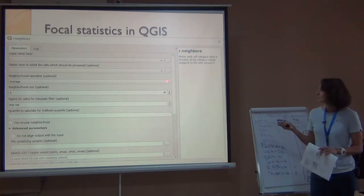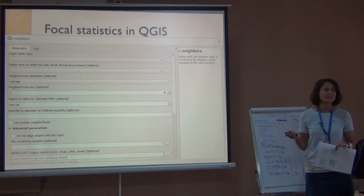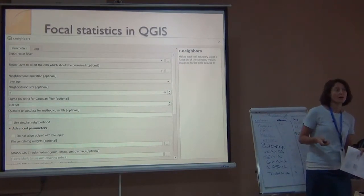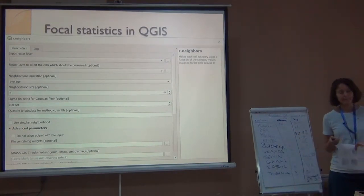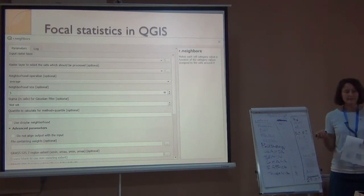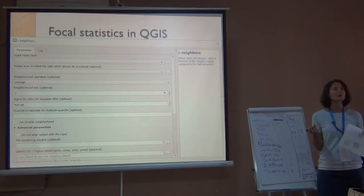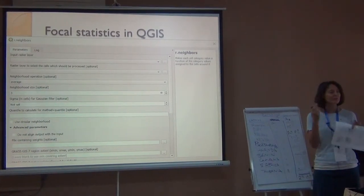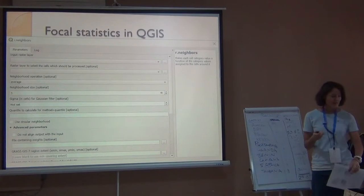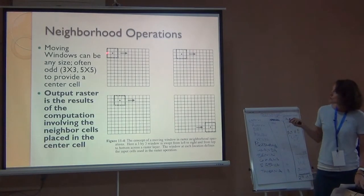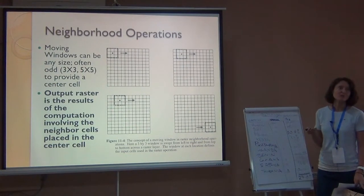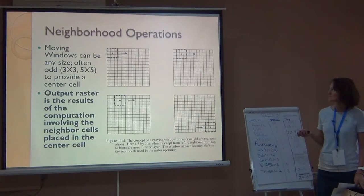But I could also have used that drop-down menu and asked for the minimum or the median or sometimes you can ask for, there's a diversity one. So how many different values are there in that neighborhood, things like that. So just to show you, the neighborhoods don't have to be 3 by 3. Usually they're an odd number so that you have a center pixel. Otherwise it doesn't work as well. If you're doing a focal stats block, it's different.